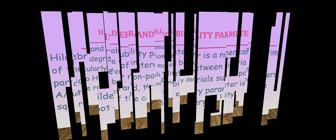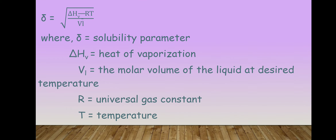The formula uses the symbol small delta (δ). Small delta is equal to the square root of cohesive energy density. The formula is: δ = √[(ΔHv − RT) / VL]. Here, delta HV is the heat of vaporization, VL is the molar volume of the liquid at the desired temperature, R is the universal gas constant, and T is the temperature at which you are determining solubility.